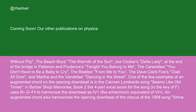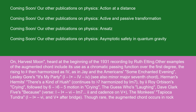One of the few examples of an augmented chord on the opening downbeat is in the Carmen Lombardo song Seems Like Old Times. In Barbershop Memories Book Two, the four-part vocal score for the song in the key of F uses B-D-F# to harmonize the downbeat as IV+, the enharmonic equivalent of VI+. An augmented chord also harmonizes the opening downbeat of the chorus of the 1908 song Shine On, Harvest Moon, heard at the beginning of the 1931 recording by Ruth Etting. Other examples include its use as a chromatic passing function over the first degree, rising to harmonize IV, as in Rodgers and Hammerstein's Some Enchanted Evening and Lesley Gore's It's My Party: I, I+, IV.